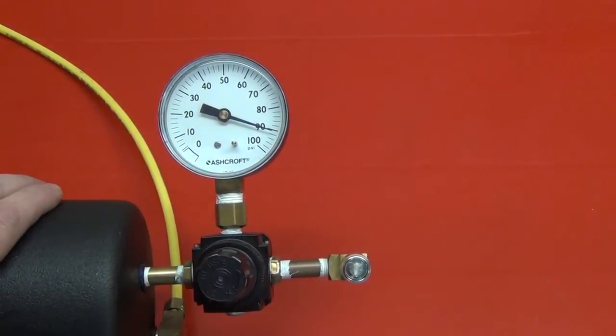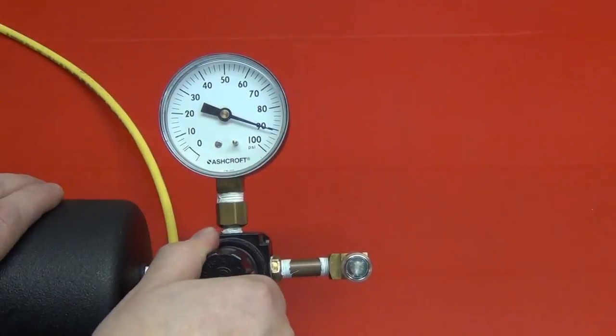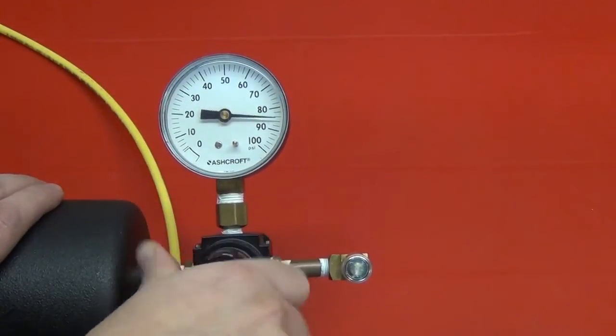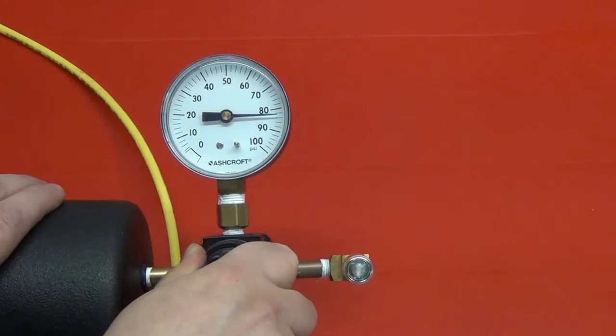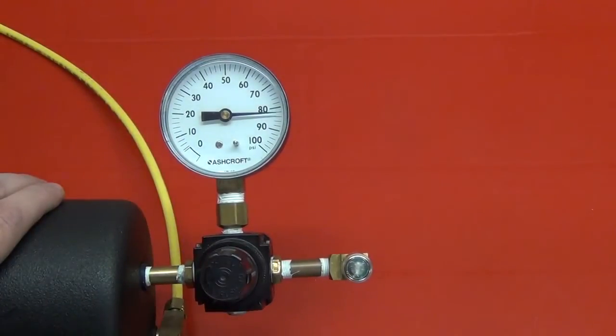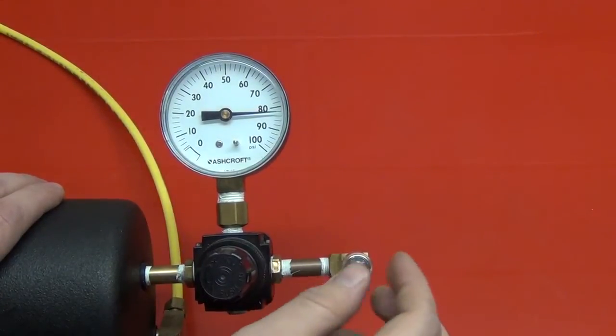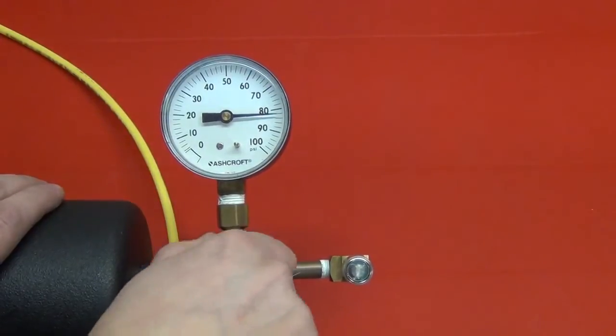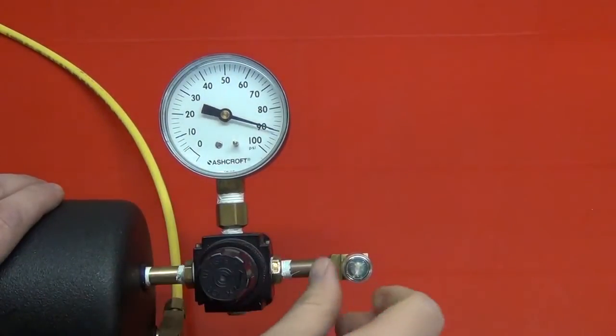To show you how it functions, once you lose approximately 5 to 10 pounds of air, the Air Guard Set & Go will begin to flash. You would then remove it, air your tire back up, and reinstall the cap.